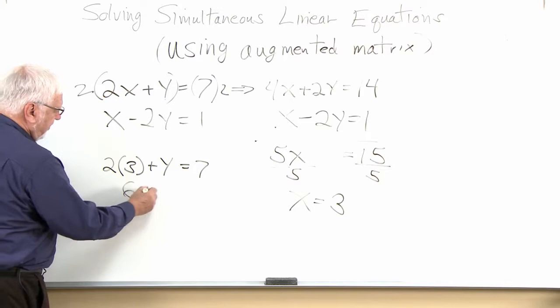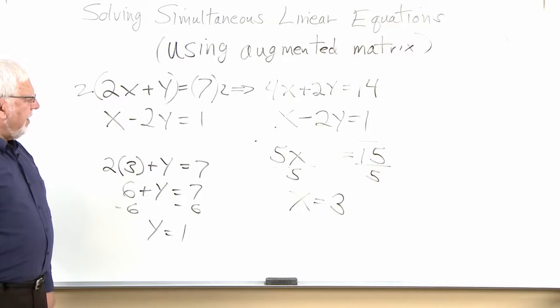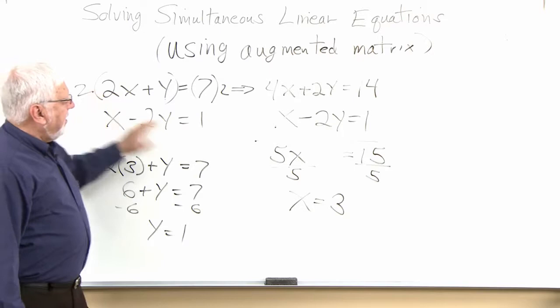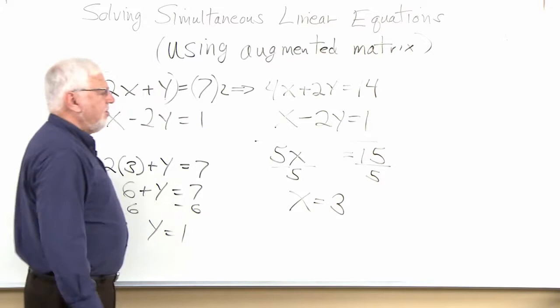What we did was multiply both sides by a number and add two equations together — the results still give us equality. Remember those properties, because augmented matrices are absolutely nothing new; just the form looks different. So now we're going to go back and solve these using an augmented matrix, keeping in mind what we just did.